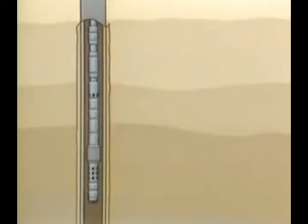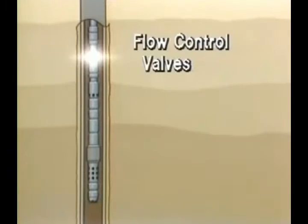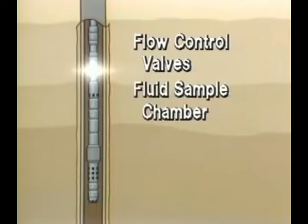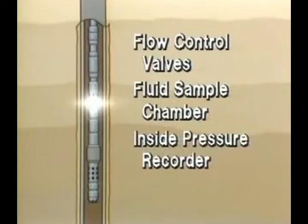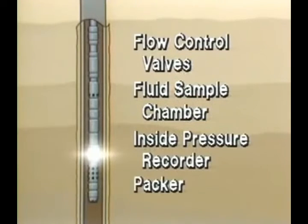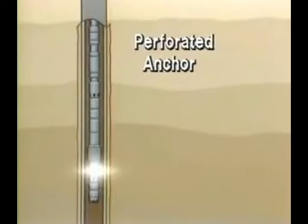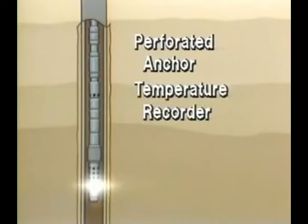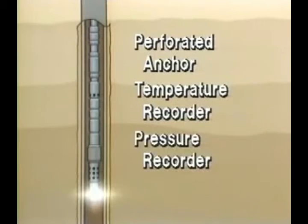In their simplest form, the drill stem test tools run on either drill pipe or tubing, consist of flow control valves, a fluid sample chamber, an inside pressure recorder, one or more packers to isolate the zone being tested, a perforated anchor for fluid to enter the tool string, a temperature recorder, and a pressure recorder.